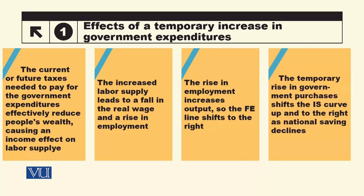The temporary rise in government purchases shifts the IS curve up and to the right as national saving declines. When the government increases its spending, the labor supply curve increases, employment level increases, the real wage falls, and output increases. The FE line shifts rightward.